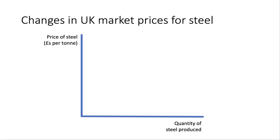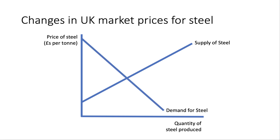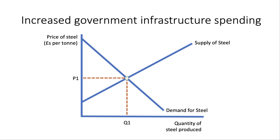Let's look at four examples of what might cause a change in the market price for steel. Remember in the exam to contextualise your diagrams — on the y-axis write the price of steel, e.g. pounds per tonne, and on the x-axis the quantity of steel bought and sold. We assume an upward-sloping supply curve and downward-sloping demand curve, with an initial equilibrium at P1, Q1.